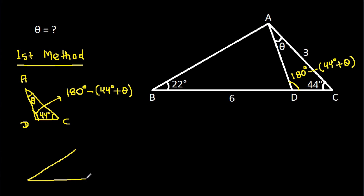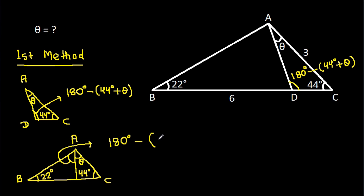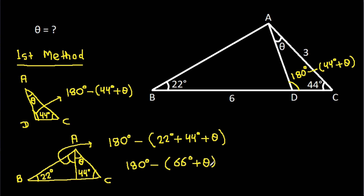In triangle ABC, this angle is 22 degrees, this angle is 44 degrees, and this angle is theta. So this angle will be 180 degrees minus (22 degrees plus 44 degrees plus theta), which gives 180 degrees minus (66 degrees plus theta).